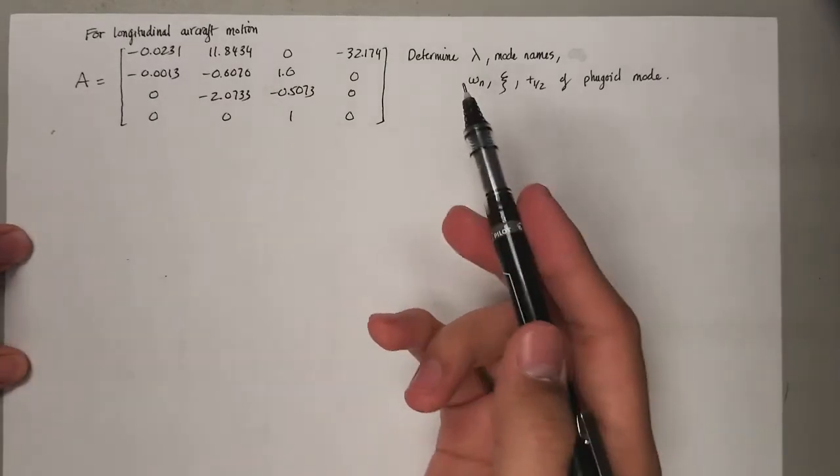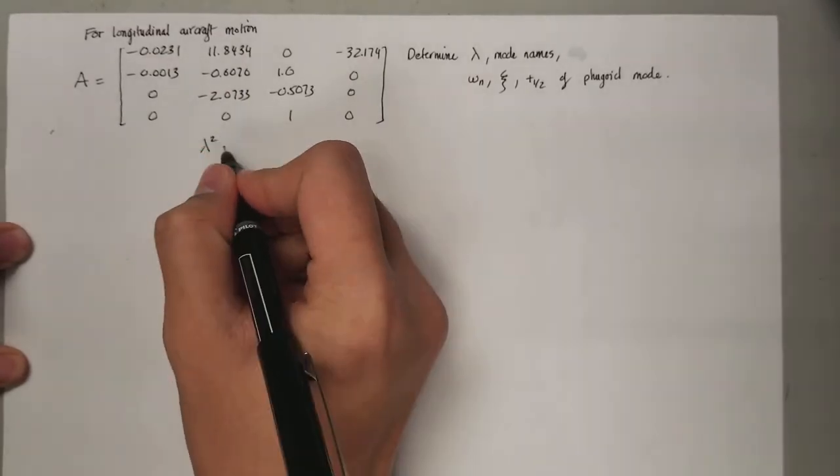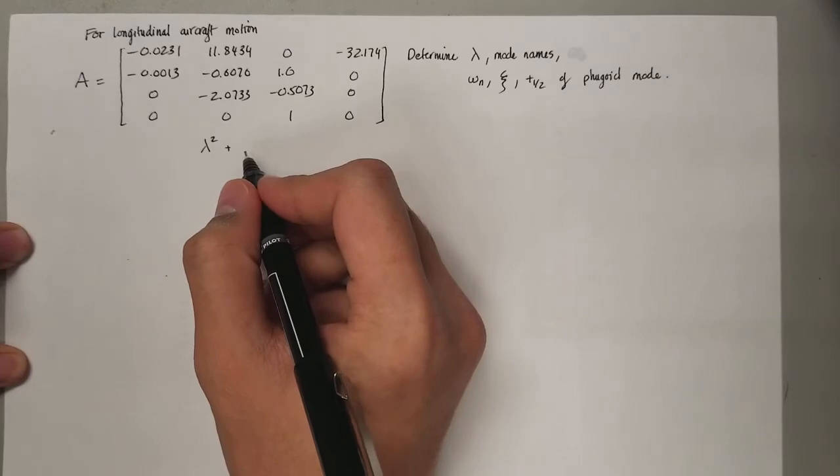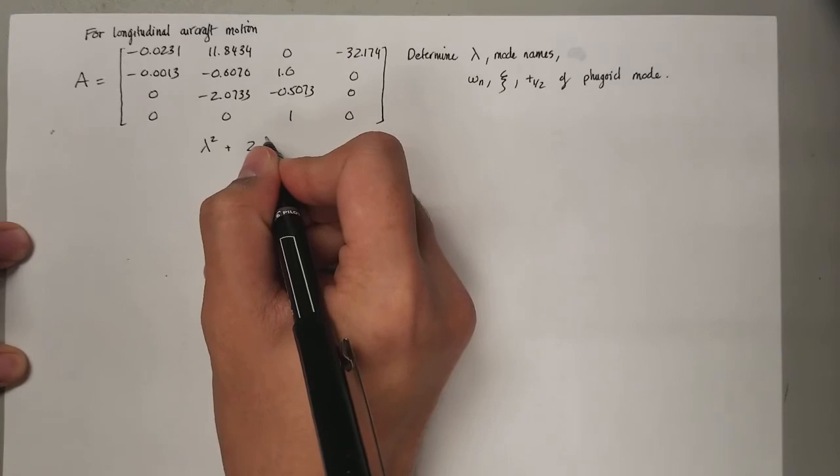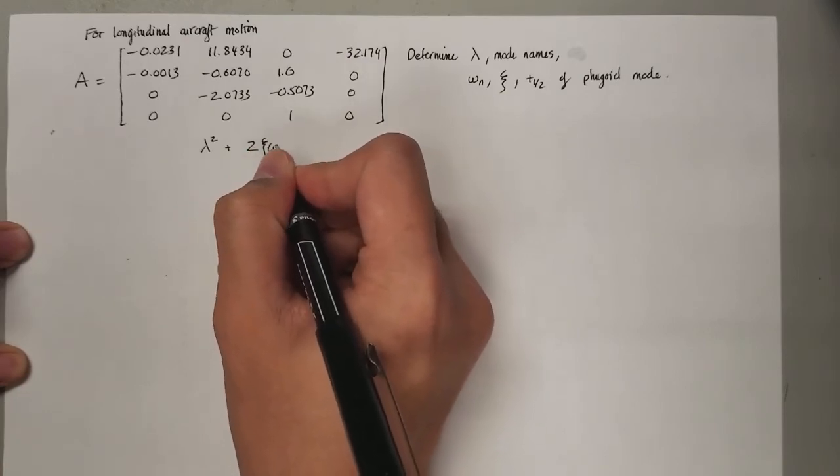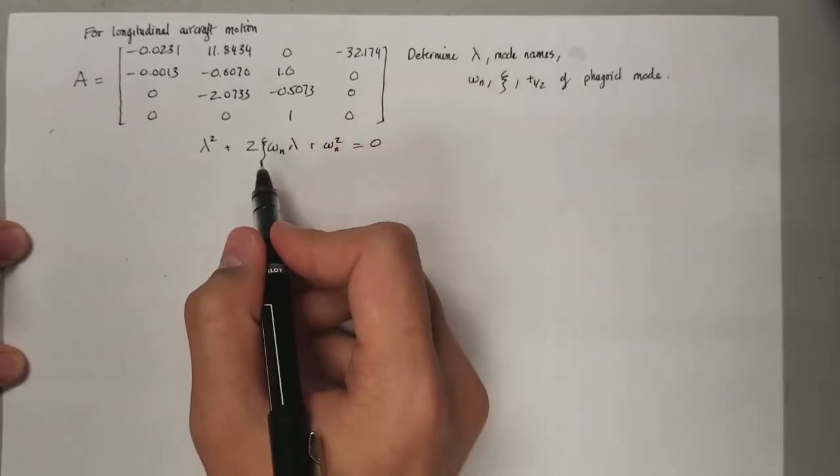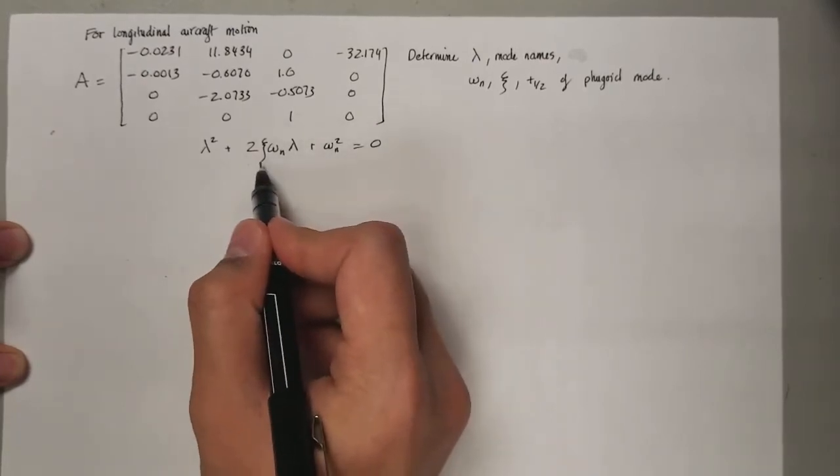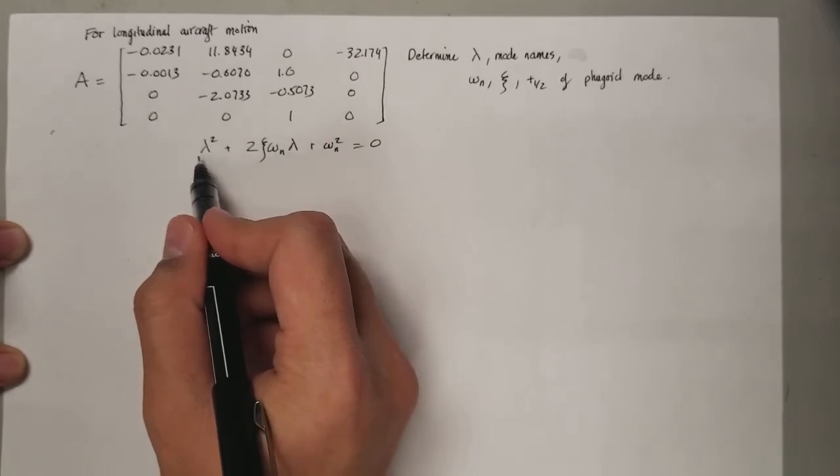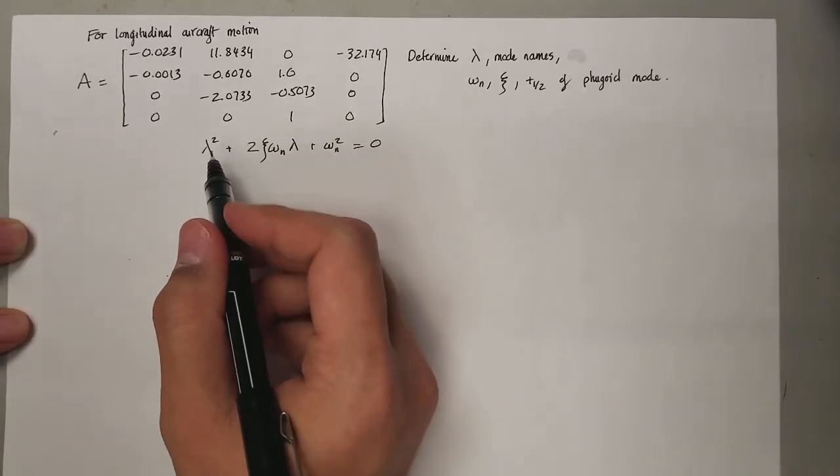So how are we going to approach the problem? Well, if you recall the very general equation relating the natural frequency and the damping ratio of the aircraft, that is just a second-order equation. This is the natural frequency, this will be the damping ratio, and this is the eigenvalues of the matrix.